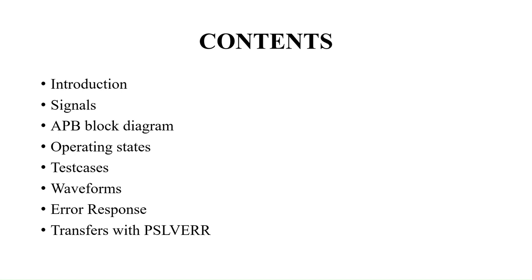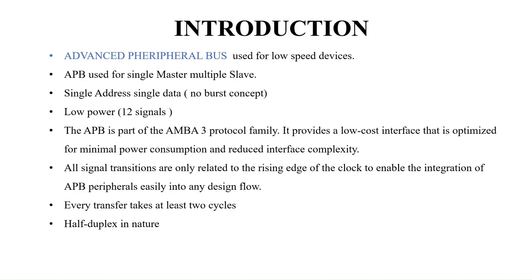APB is the Advanced Peripheral Bus, used for low-speed, low-frequency peripheral devices. The APB protocol is used to transfer data to low-frequency peripherals. APB uses a single master, multiple slave architecture. Compared to other protocols like AHB and AXI which have multiple masters and multiple slaves, APB has one master and multiple slaves. APB also has only 12 signals, which is why it is a low-power conception.